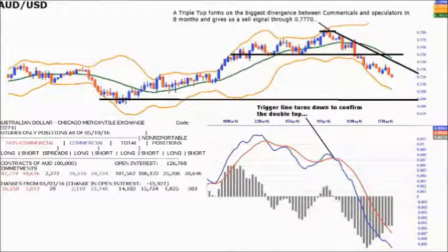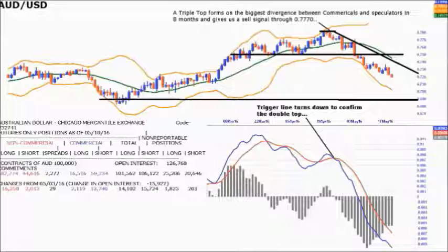First chart is AUD/USD. I'd spotted the commercials and speculators having a big divergence - speculators buying heavily, commercials selling - and it was an eight-month extreme. So when that triple top formed, I was keen to get in and came in at 77.70. Prices moved down nicely. I've drawn in the 75 support level, and at the time I wanted to know if that support level was going to give a good breakout to the downside or whether it would be a failed breakout. Looking at the positions, the non-commercial speculators are still holding twice as many longs as shorts, despite the fact they've got hits on the turn, and they've actually added 16,250 long contracts - so they're trying to buy the dip.